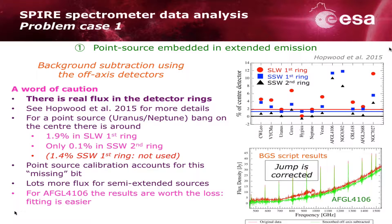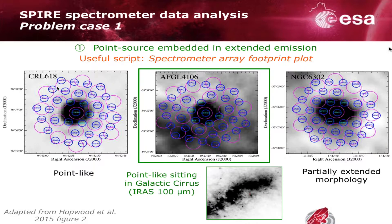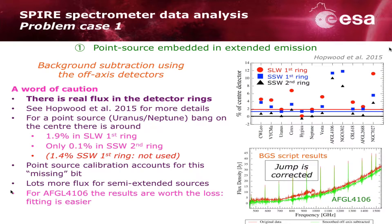A note about this method: there is actually some real flux in the outer ring of detectors. As discussed in Hopwood et al. 2015, about 2% real flux was found in the SLW first ring and only about 1.1% in the SSW second ring — these are the rings used in the background subtraction script; the first ring of SSW is not used. The very outer ring is in the vignetted region of the detector arrays, so they aren't used as they tend to have higher uncertainties. You have to weigh up whether subtracting 2% of flux from SLW is worth the result. For AFGL 4106 the results are worthwhile because it's much easier to fit the result and extract line fluxes more accurately.